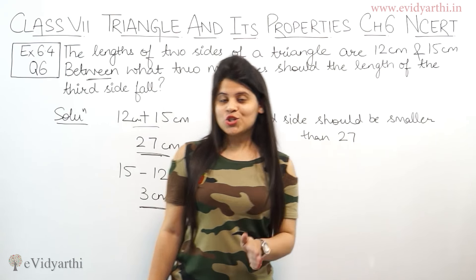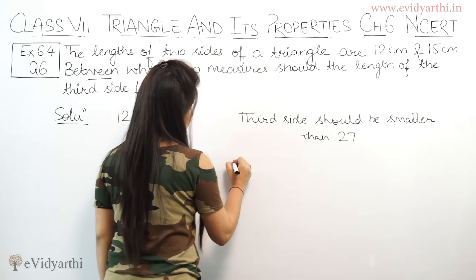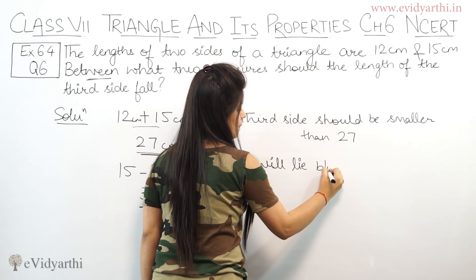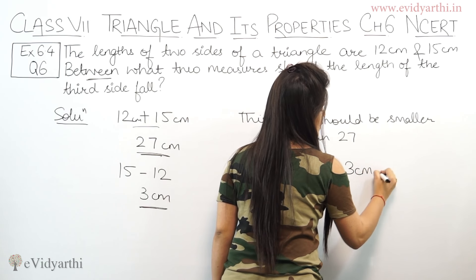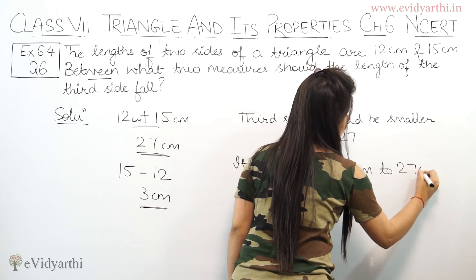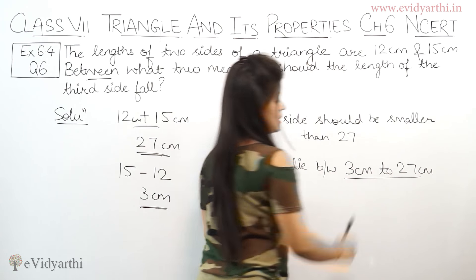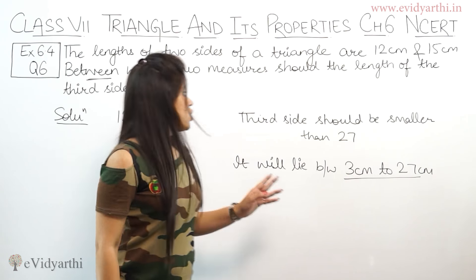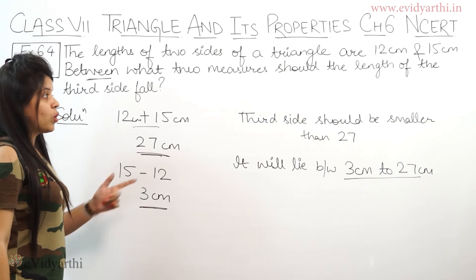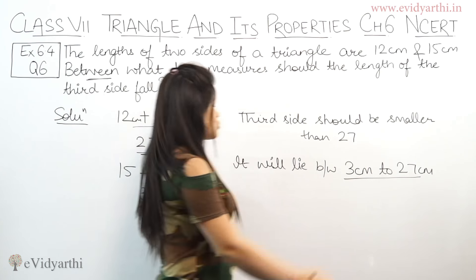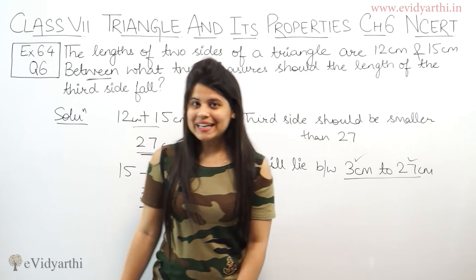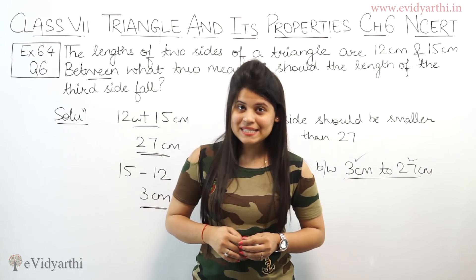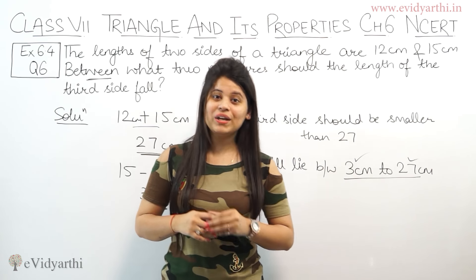So we can say the third side will lie between 3 cm and 27 cm. In the question, between what two measures should the length be? It will be between 3 cm and 27 cm. With this we complete question number 6 and exercise 6.4.